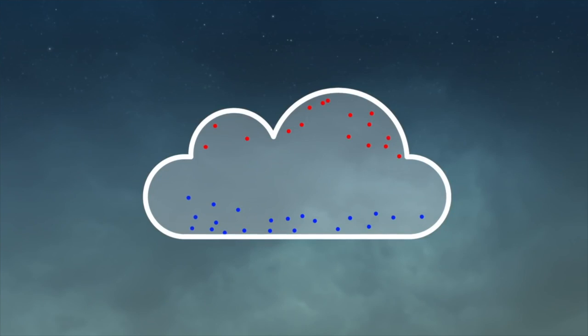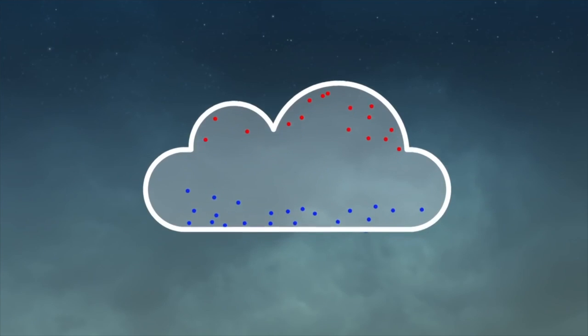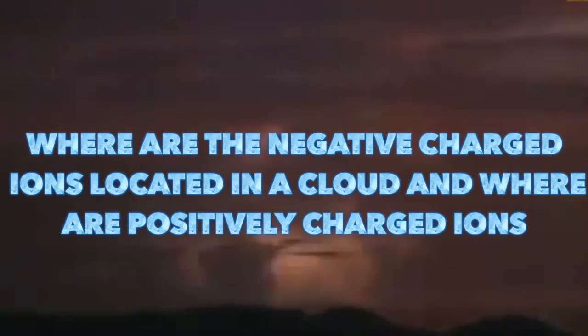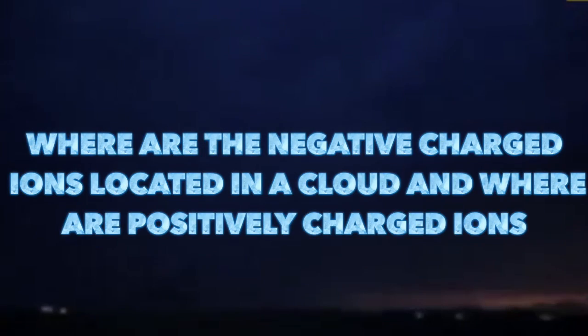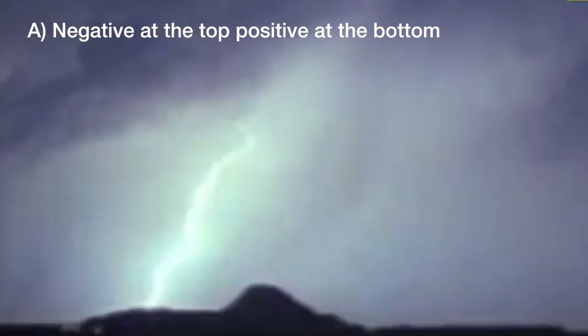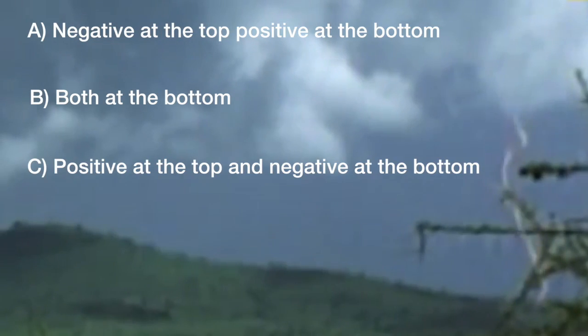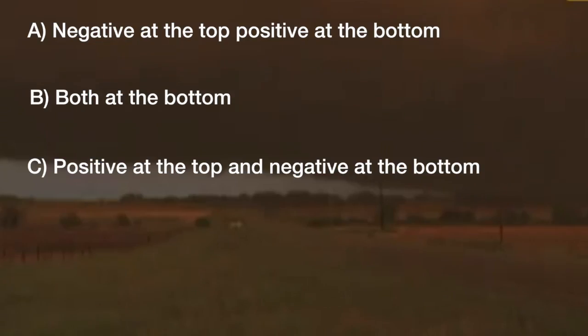Lightning occurs when there are enough negatively charged particles pooled at the bottom of a cloud. The front of a cloud is cold, causing warm positively charged air to rise and help through the path for the lightning to travel. It's time for question number two. Where are the negatively charged ions located in the cloud and where are the positively charged ions? A, negative at top, positive at the bottom. B, both at bottom. C, positive at the top and negative at the bottom.